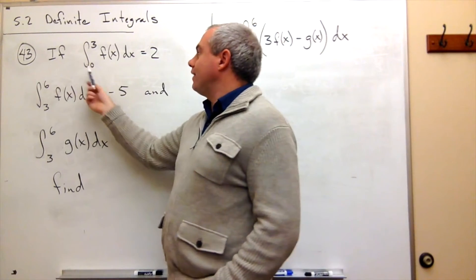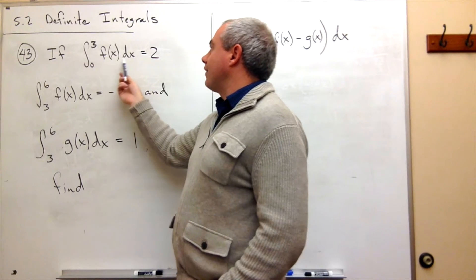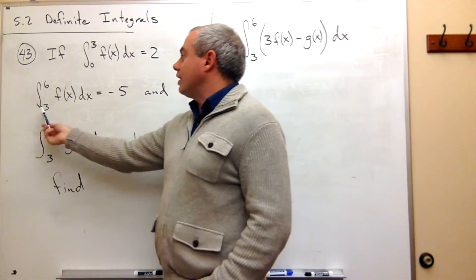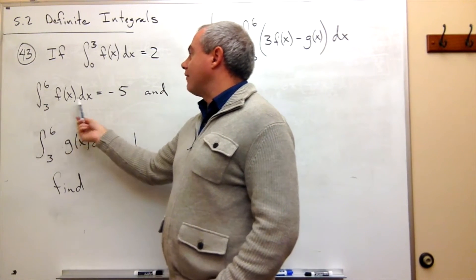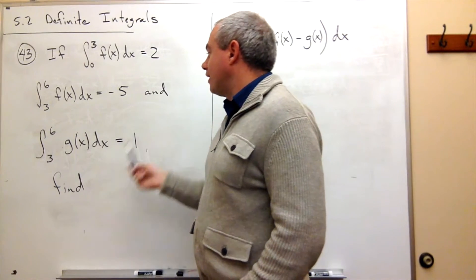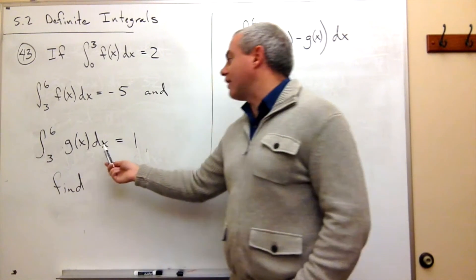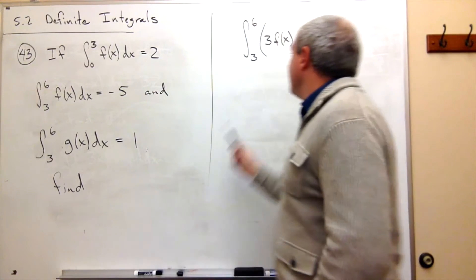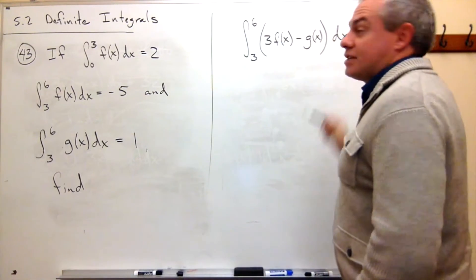We're told if the integral from 0 to 3 of f of x dx is 2, the integral from 3 to 6 of f of x dx is negative 5, and the integral from 3 to 6 of g of x dx is 1, then we need to find this integral.